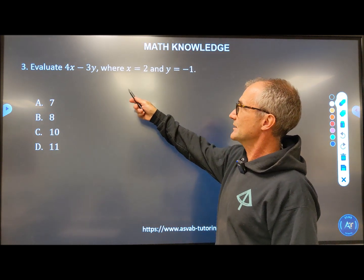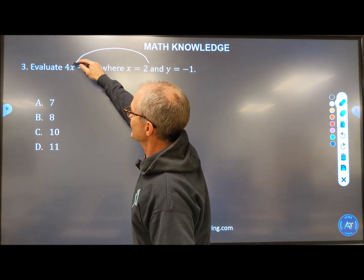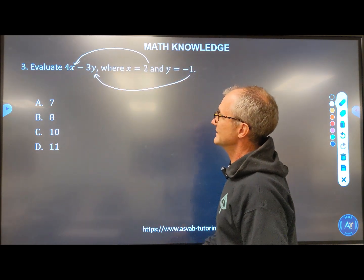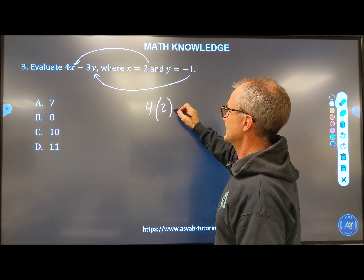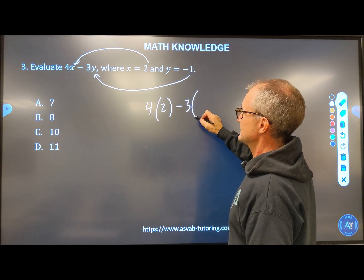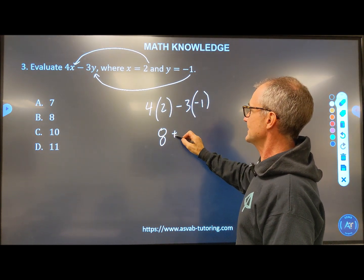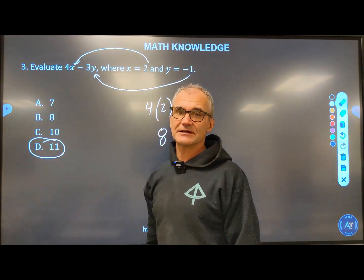Number three, evaluate 4X minus 3Y when X is equal to two. I'm going to take that, plug it in there. And Y is equal to negative one. I want to keep track of your negatives. So I have four times X, which is two, minus three times negative one. Negative times the negative is positive, so I have eight plus three or 11. Answer D right there.